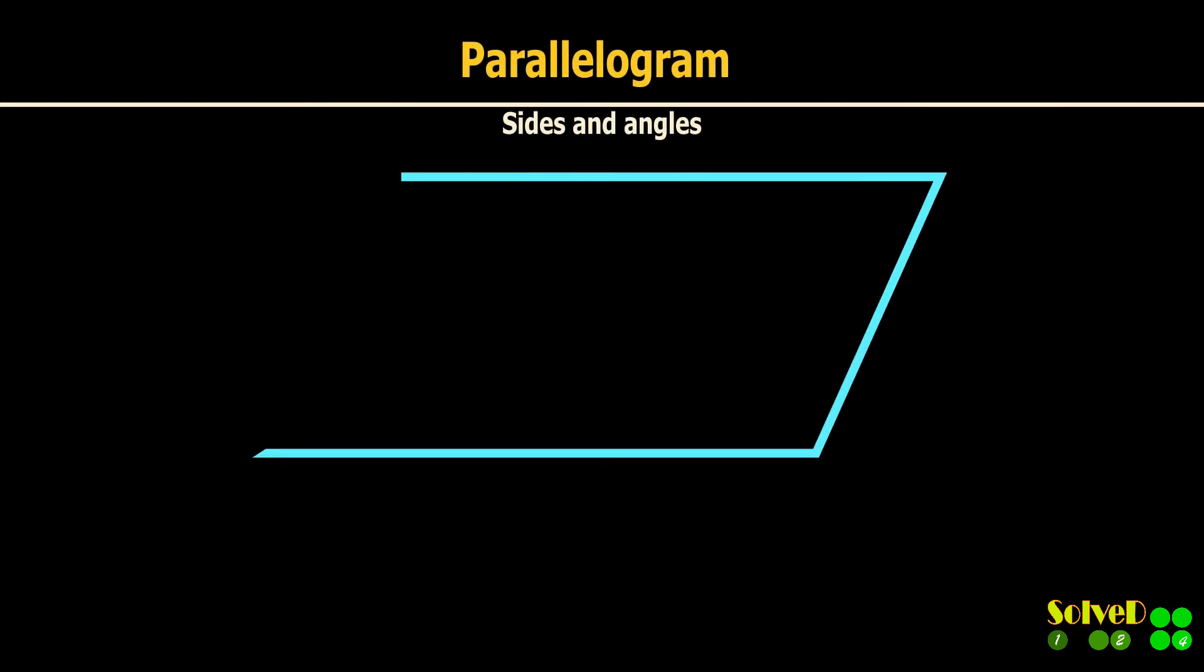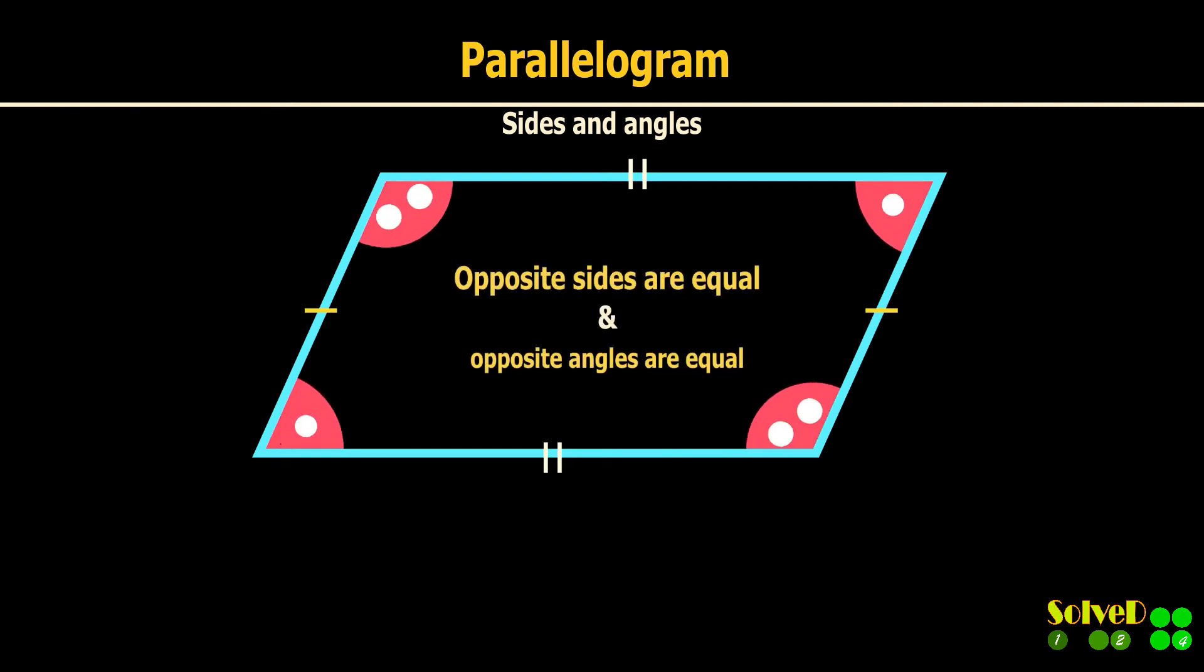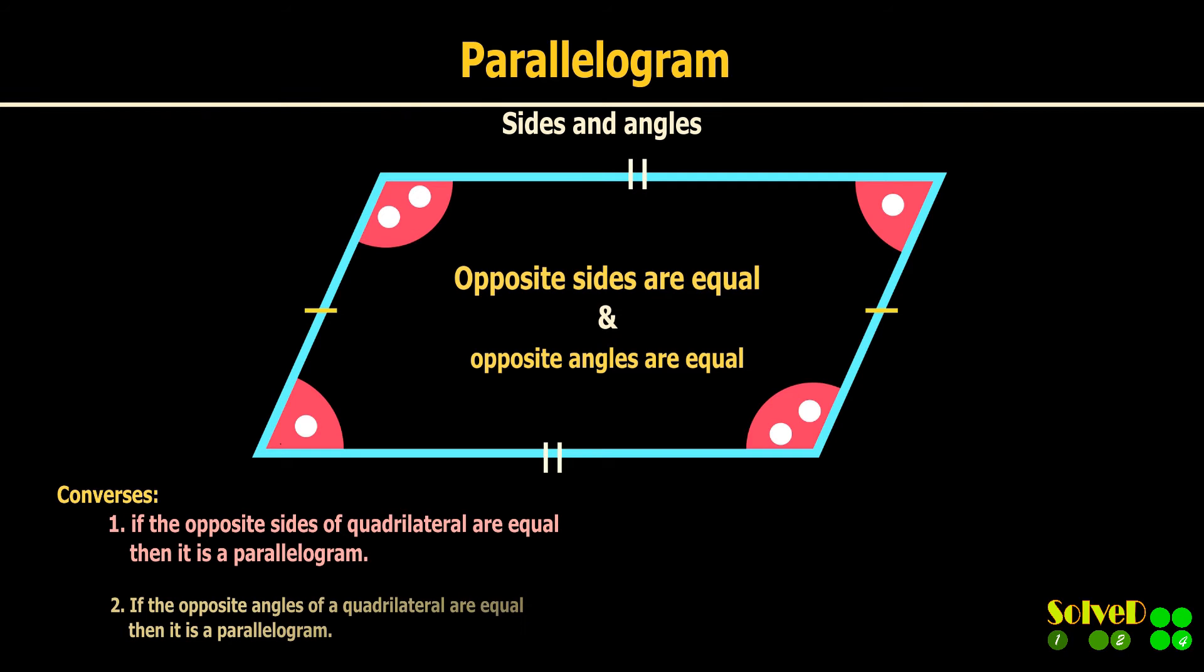In a parallelogram, opposite sides are equal and opposite angles are equal. Conversely, if opposite sides or the opposite angles of a quadrilateral are equal, then it is a parallelogram.